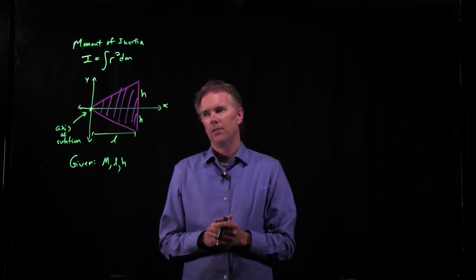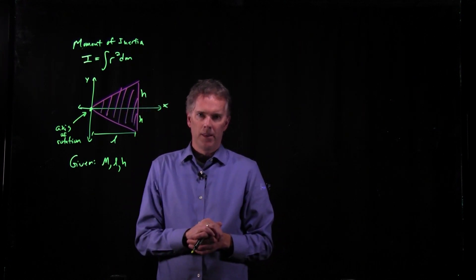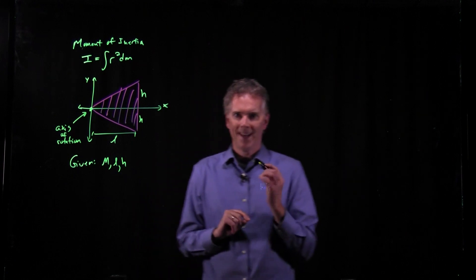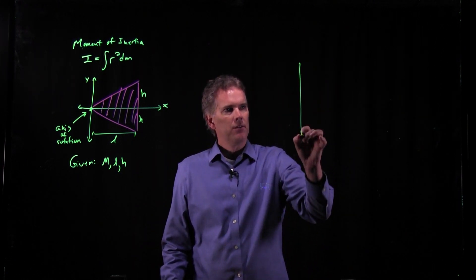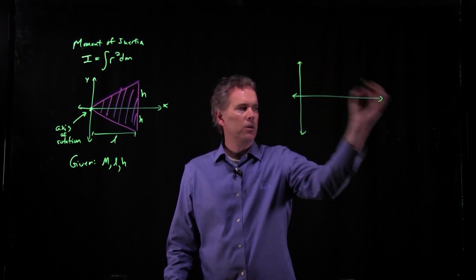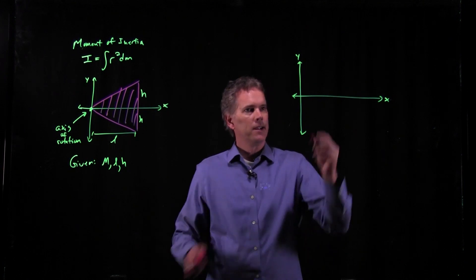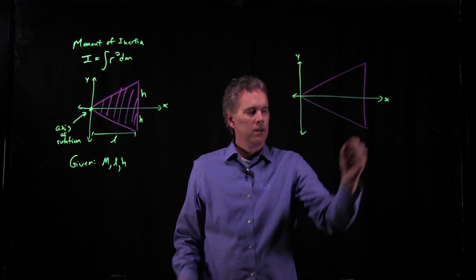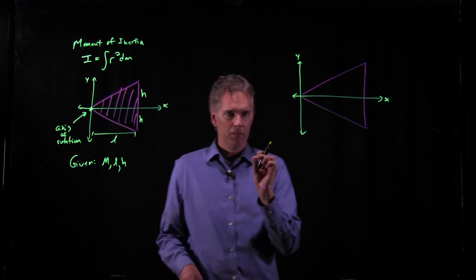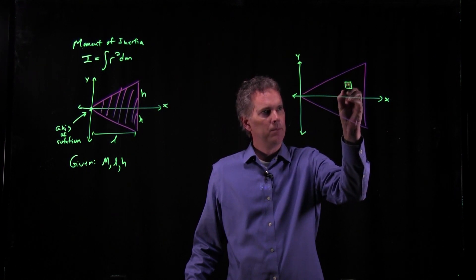If we have this sort of object, we need to know where the axis of rotation is. Let's say that the axis of rotation is right through the origin, and now this thing is going to spin around like that. How do we calculate this moment of inertia? There is the formula right there, but we have to figure out what r² is and what dm is.